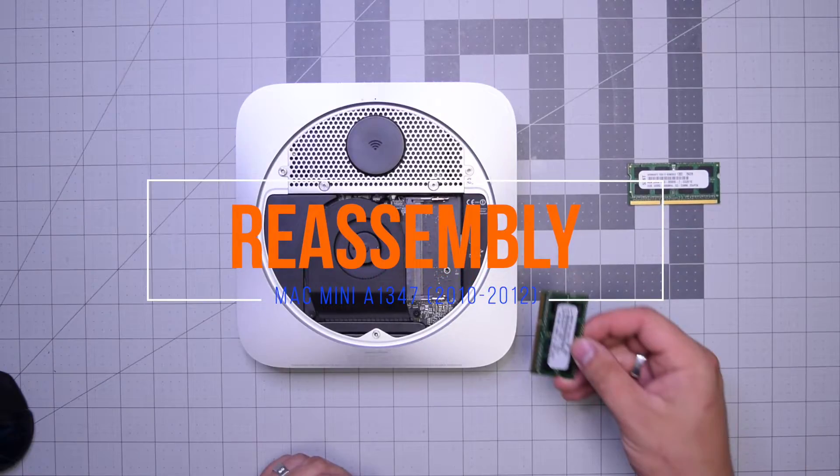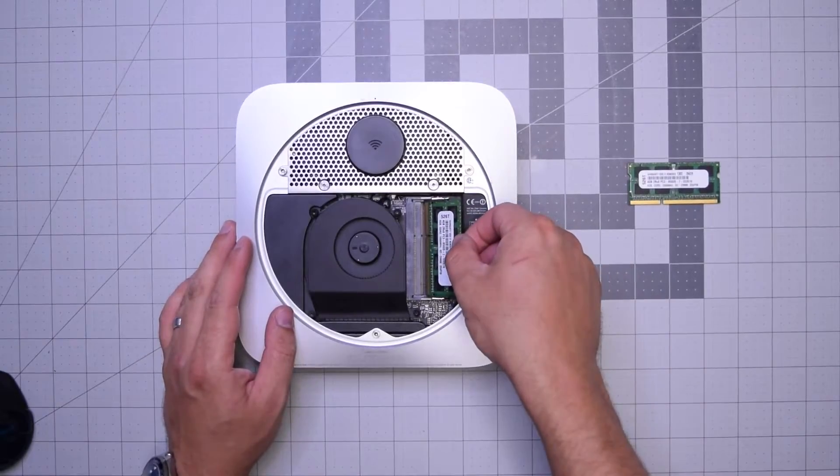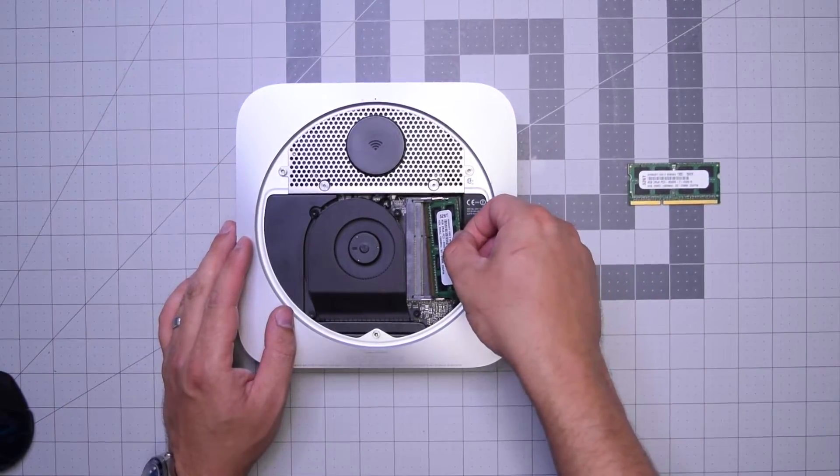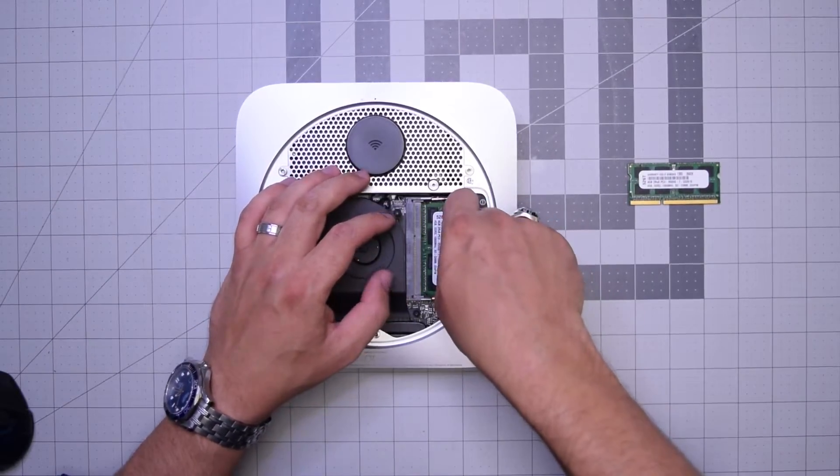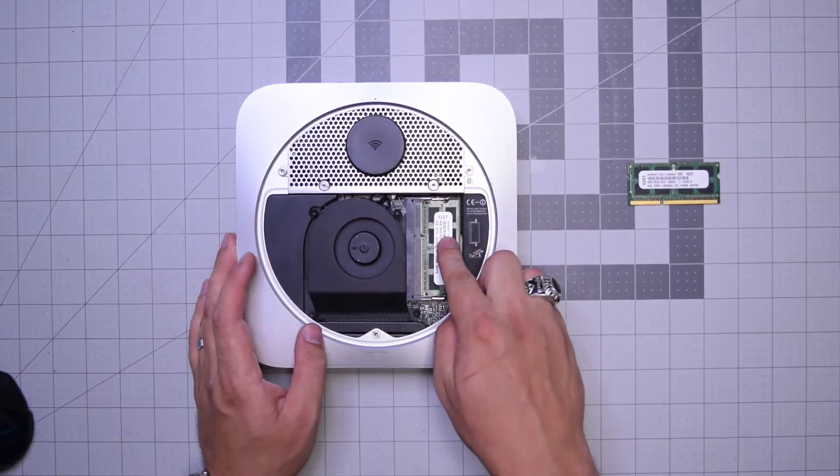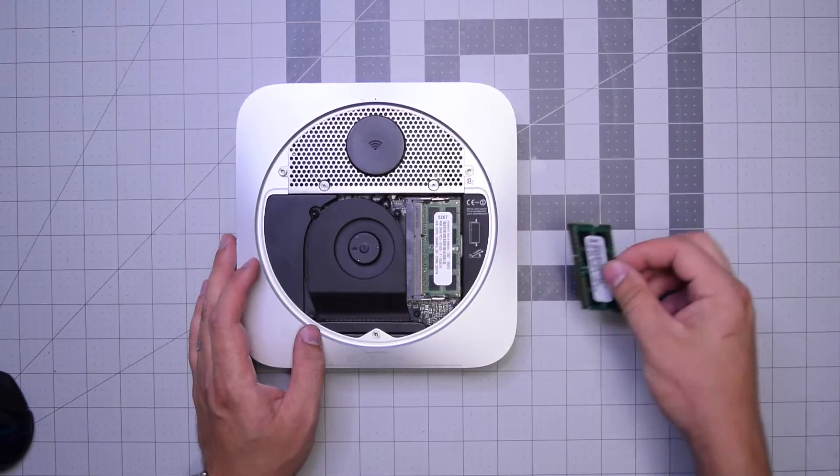Reassembly A1347. Insert the new memory into the bottom slot first at a 45-degree angle. Push it in and click it into place. You should hear a nice solid click.